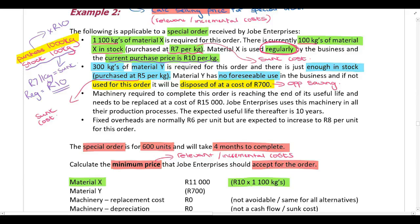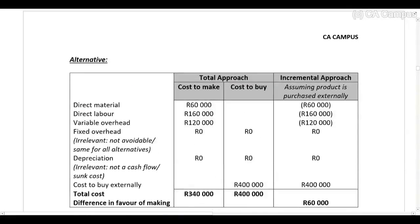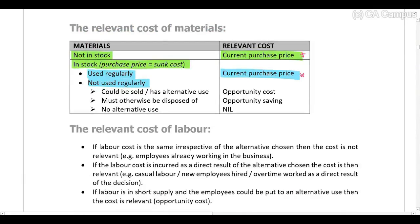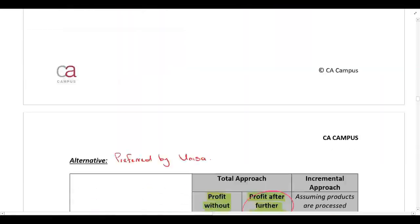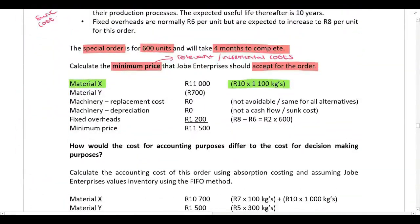If we do not accept the special order, we will have to pay someone 700 Rand to dispose of the material. However, if we accept the special order, we use the material and avoid that 700 Rand disposal cost — that is a saving. Therefore, for Material Y we reduce our cost by 700 Rand in the calculation.